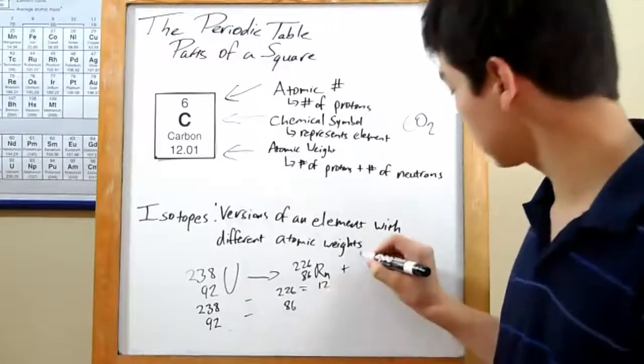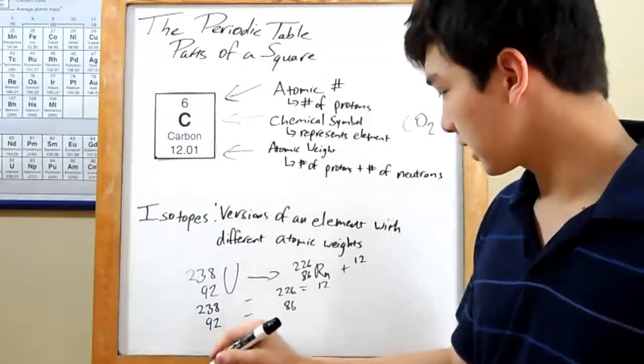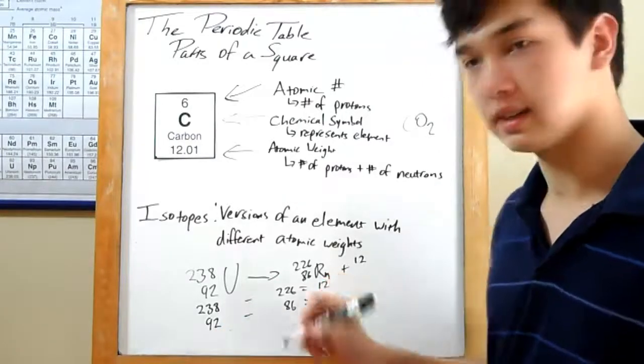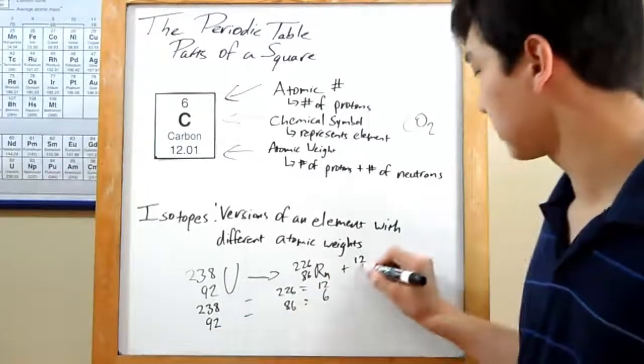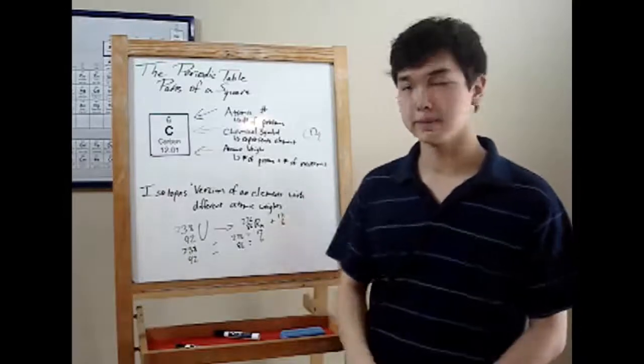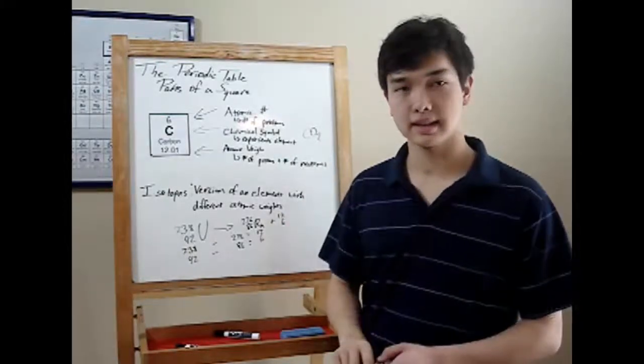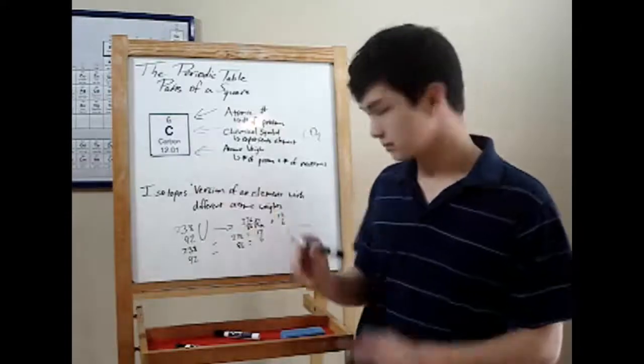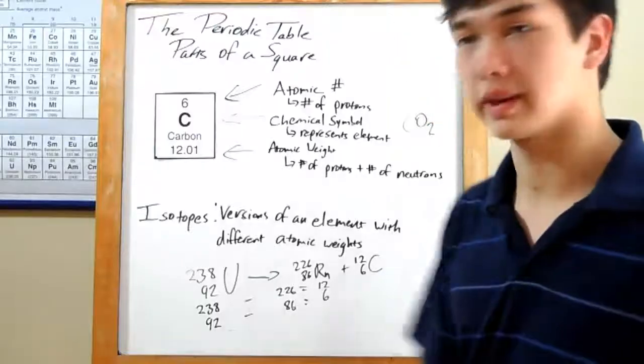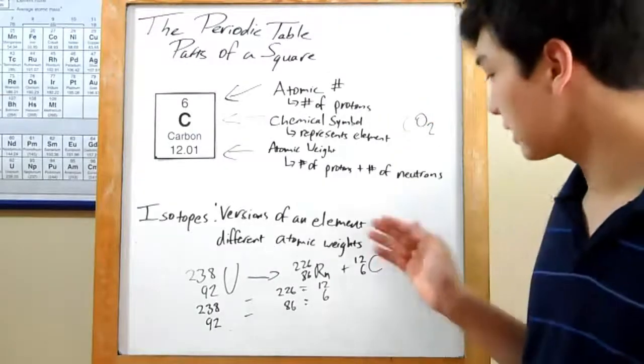Doing so for atomic weight will give us 12, and you might see where this is going. Doing it down here, subtraction 92 minus 86 will give us 6. Remember, when determining what an element is, go by the atomic number. Looking on the periodic table, or really right over here, we've got 6 for carbon. And so now you know what your element is and how much it weighs.